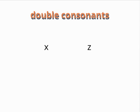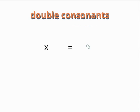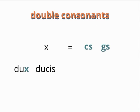The consonants X and Z, for example, are actually double consonants — that is, they represent two consonant sounds in one letter. X represents CS or GS, for example, in dux/ducis and rex/regis.